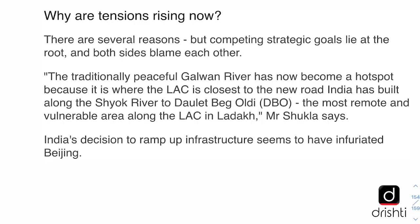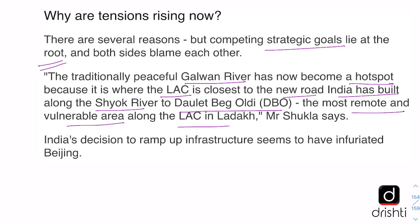The tensions between the two countries are rising for several reasons, but competing strategic goals lie at the root. The traditionally peaceful Galwan River has become a hotspot because it is where the LAC is closest to the new road India has built along the Shyok River to Daulat Beg Oldi — the most remote and vulnerable area along the LAC in Ladakh. India's decision to ramp up infrastructure on its side appears to have infuriated Beijing, which has long held an enormous advantage in border infrastructure and does not want India to catch up.